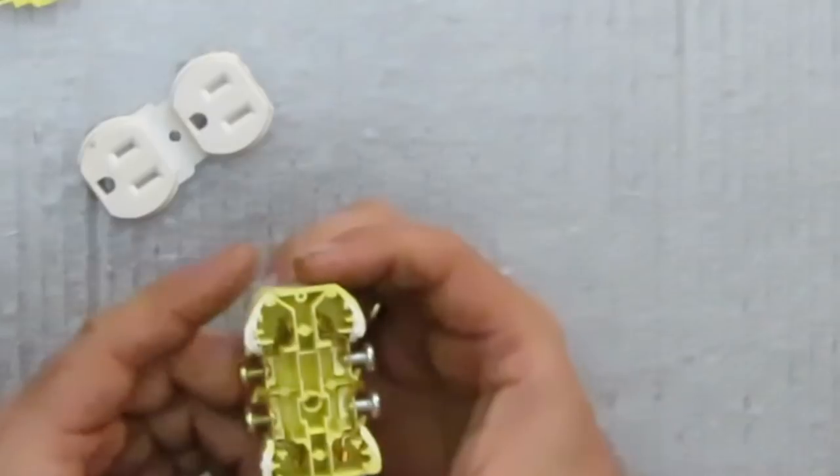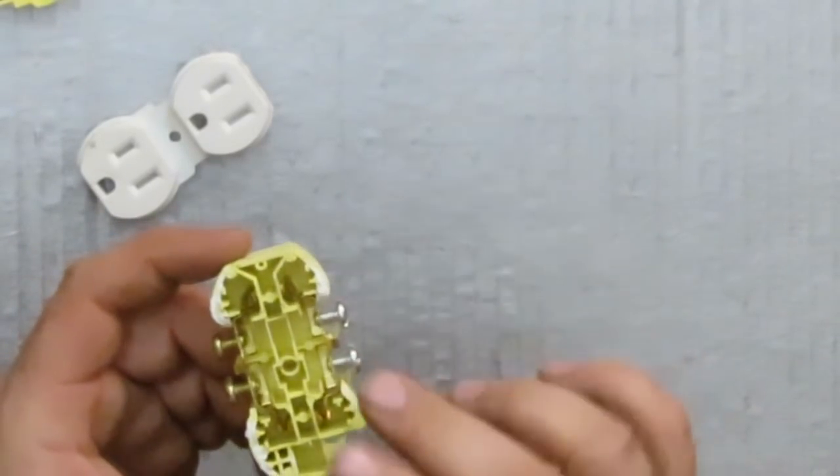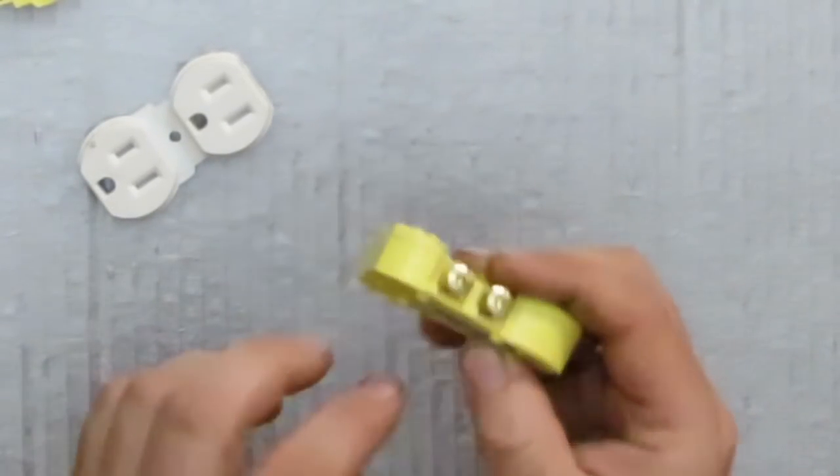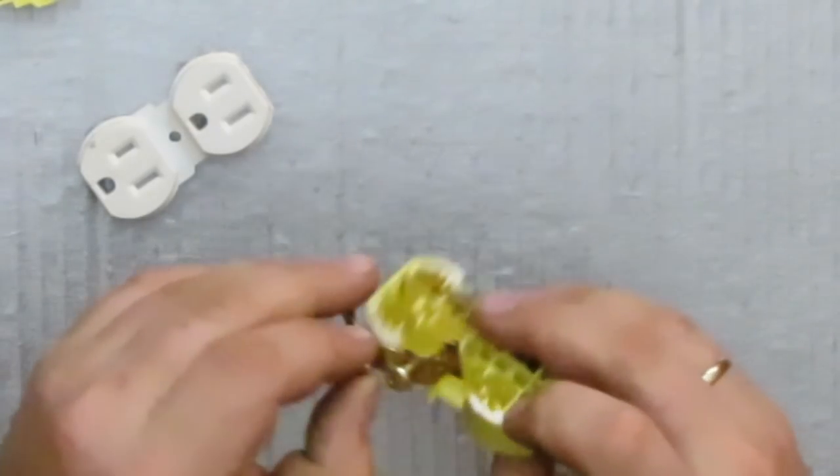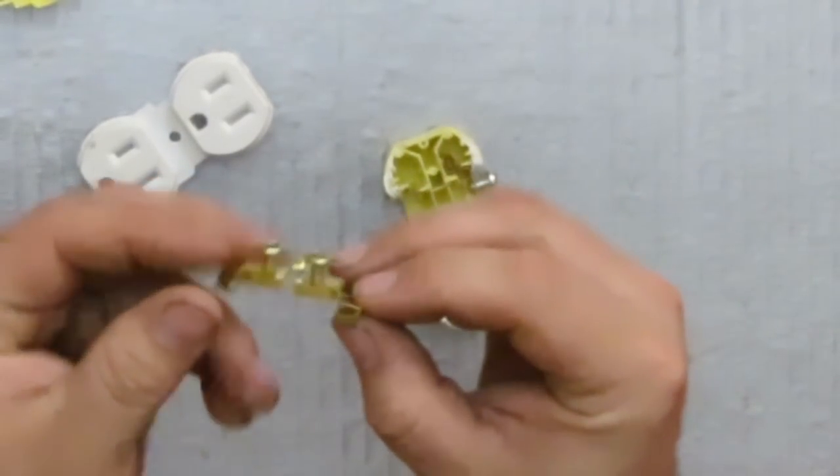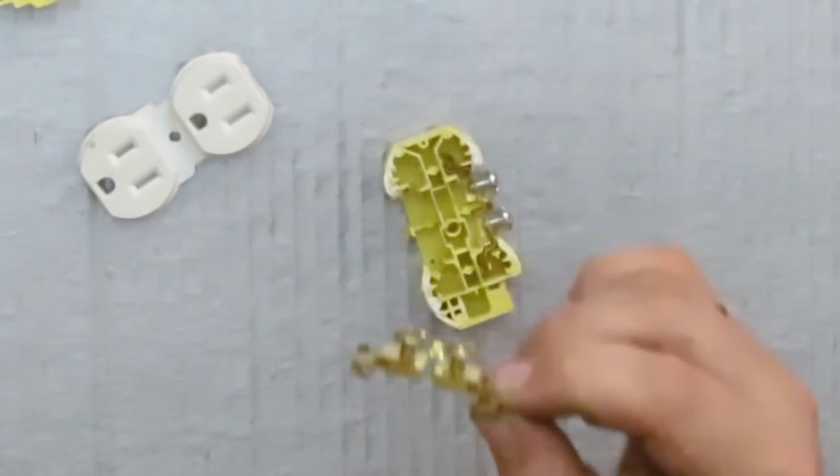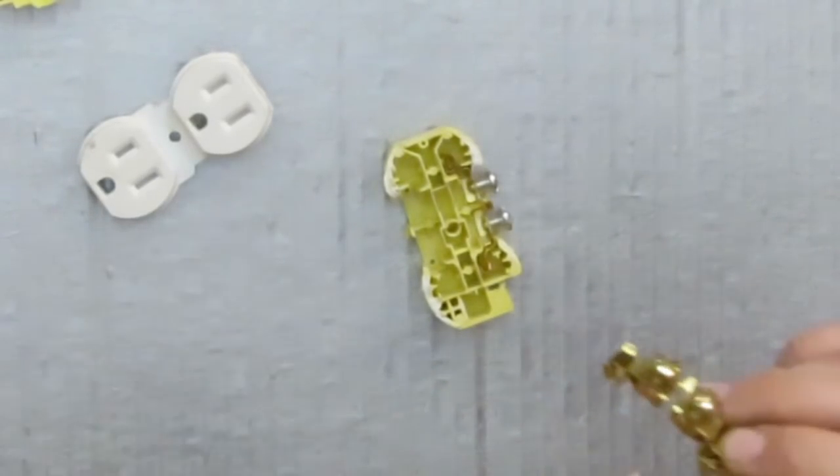You have your hot side and your neutral side and their corresponding stab ins. And now on your hot side you have your spots for your stab ins and you have your screws.